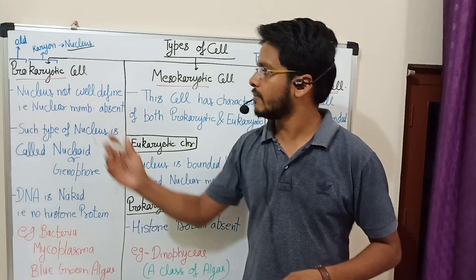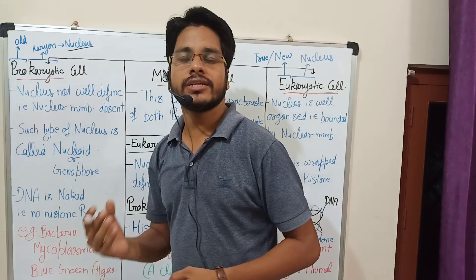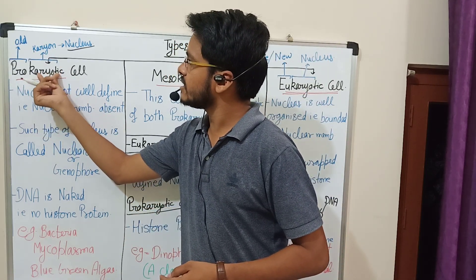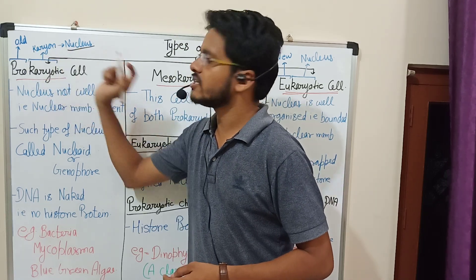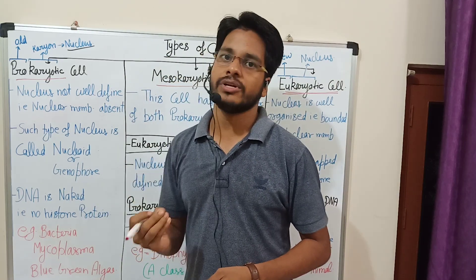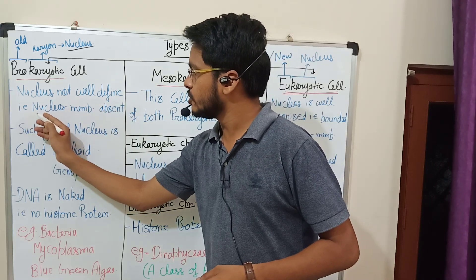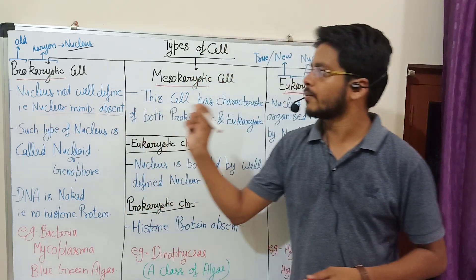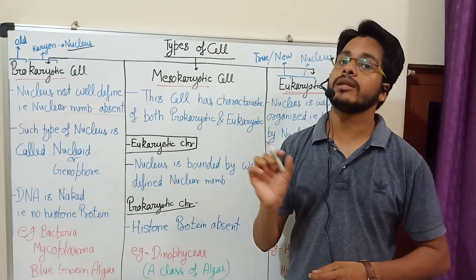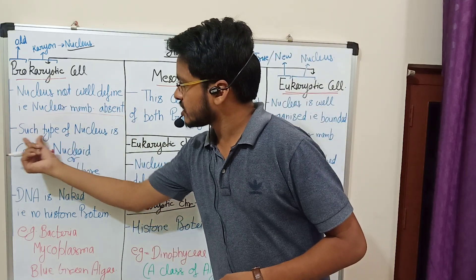First we discuss prokaryotic cells. 'Pro' means old or primitive, and 'karyotic' comes from 'karyon' which means nucleus. So prokaryotic cells have a nucleus that is old or primitive — meaning the nucleus is not well defined, that is, nuclear membrane is absent in prokaryotic cells.